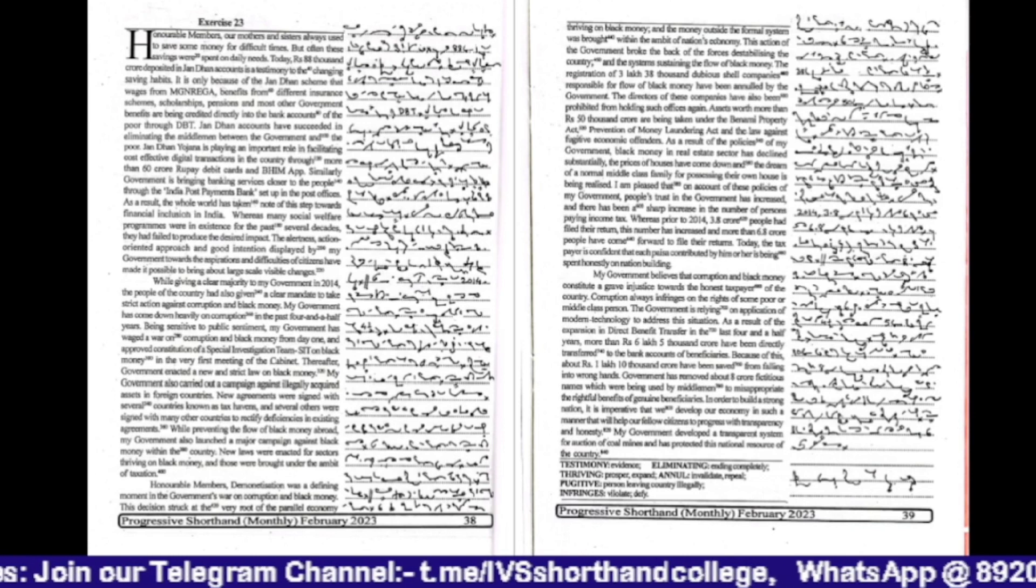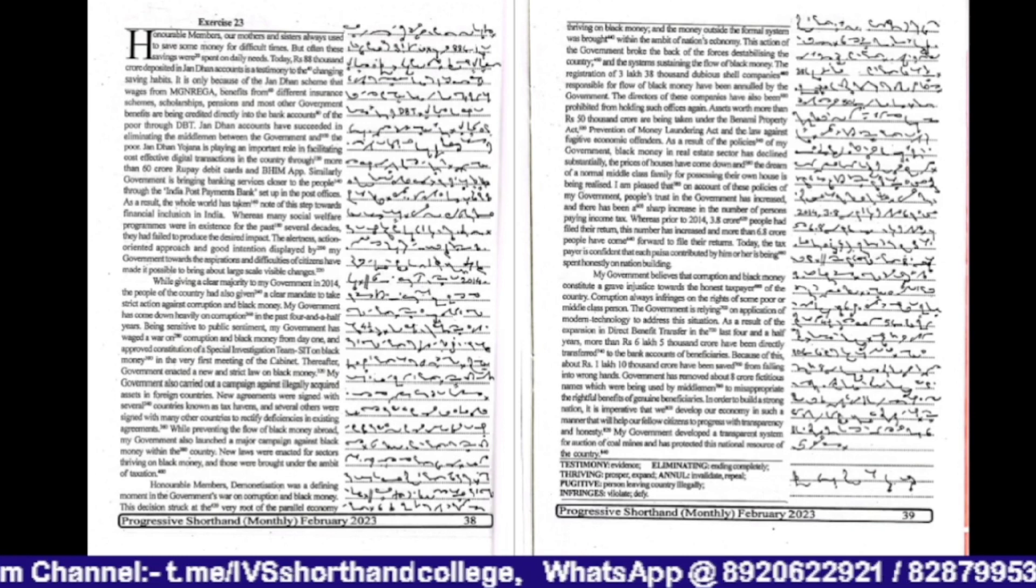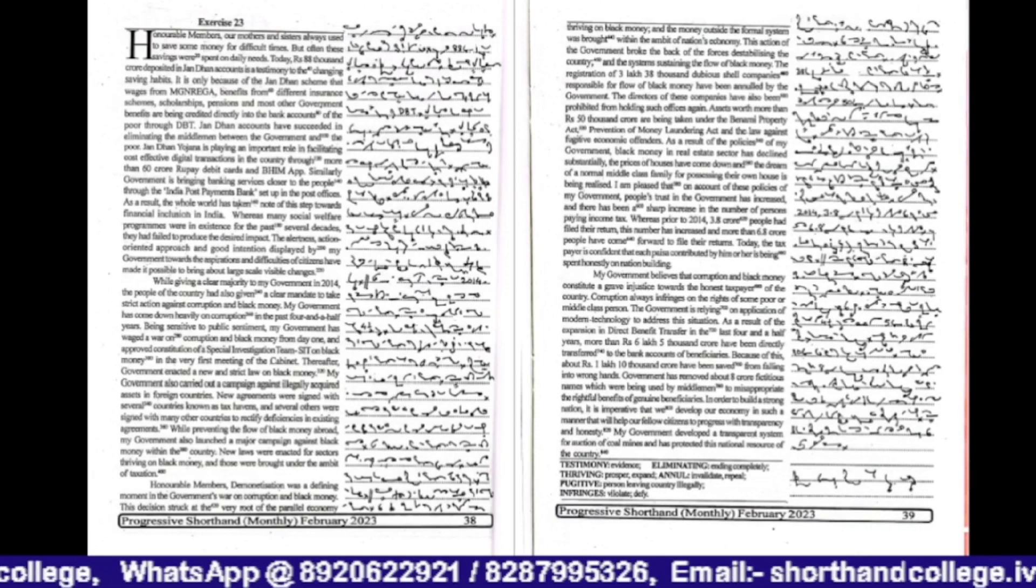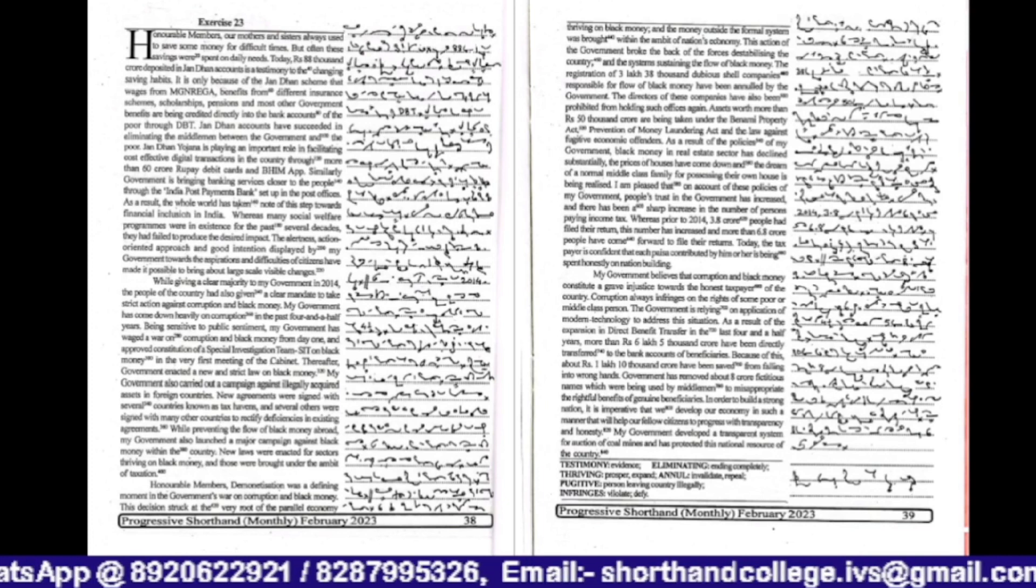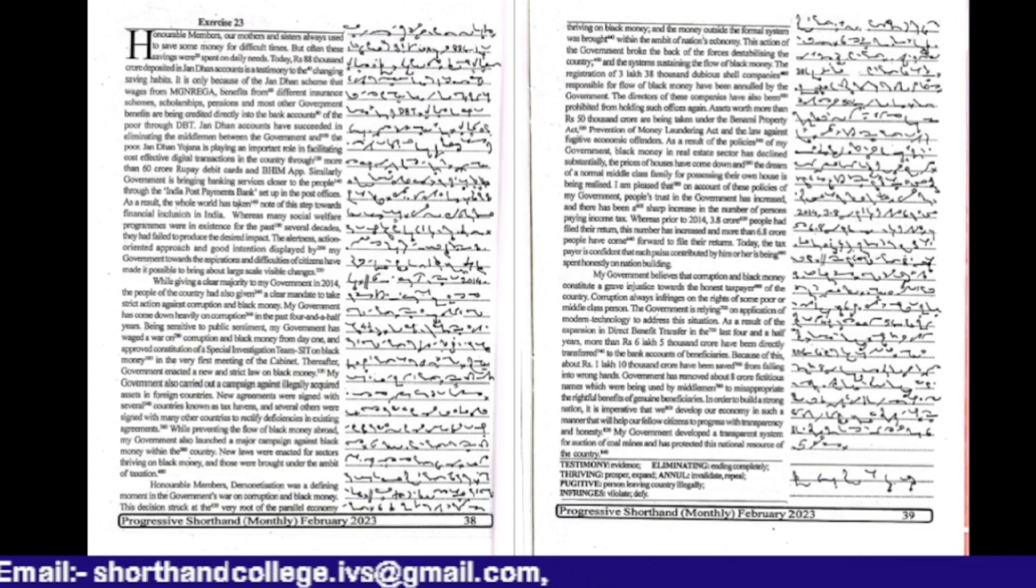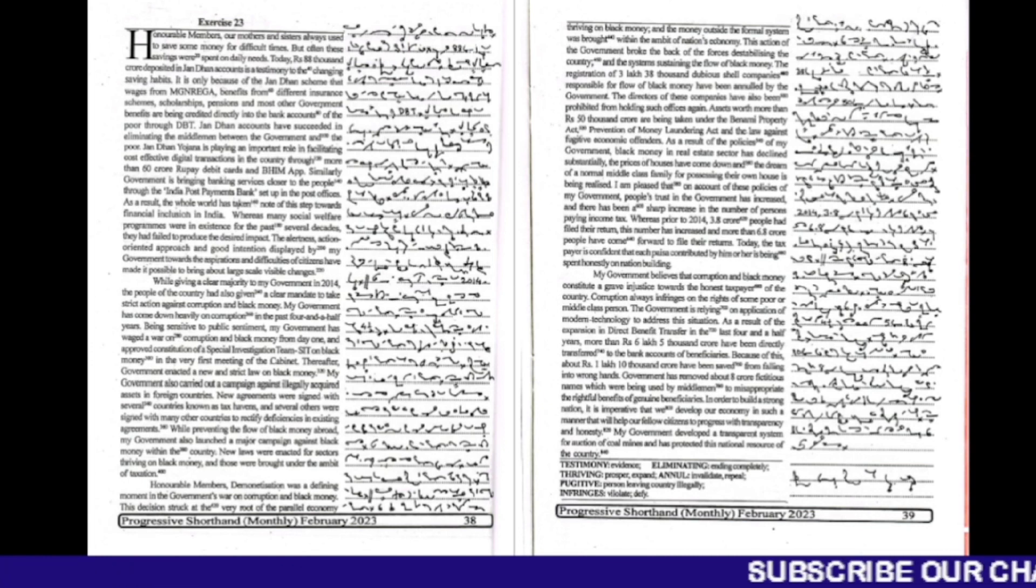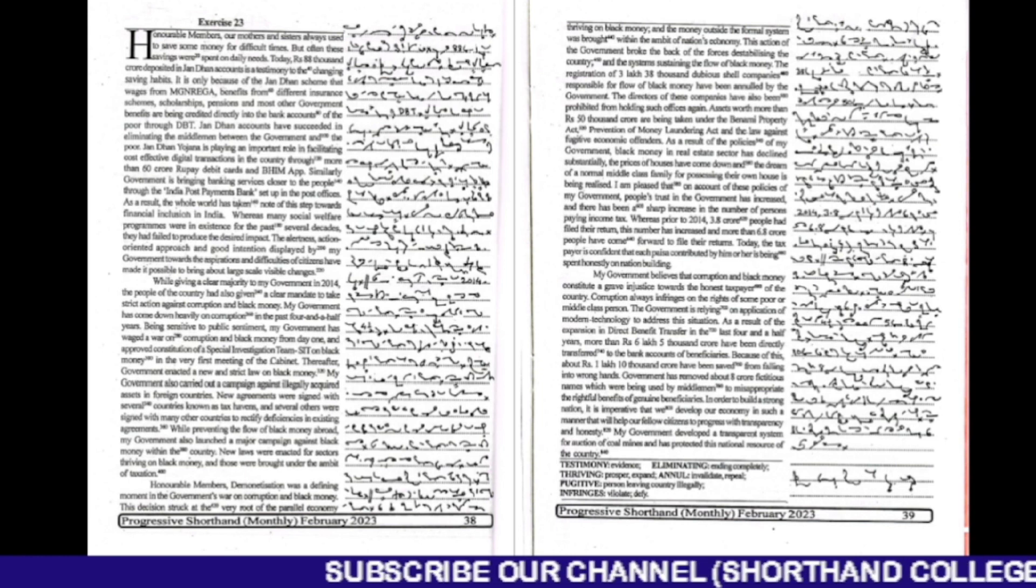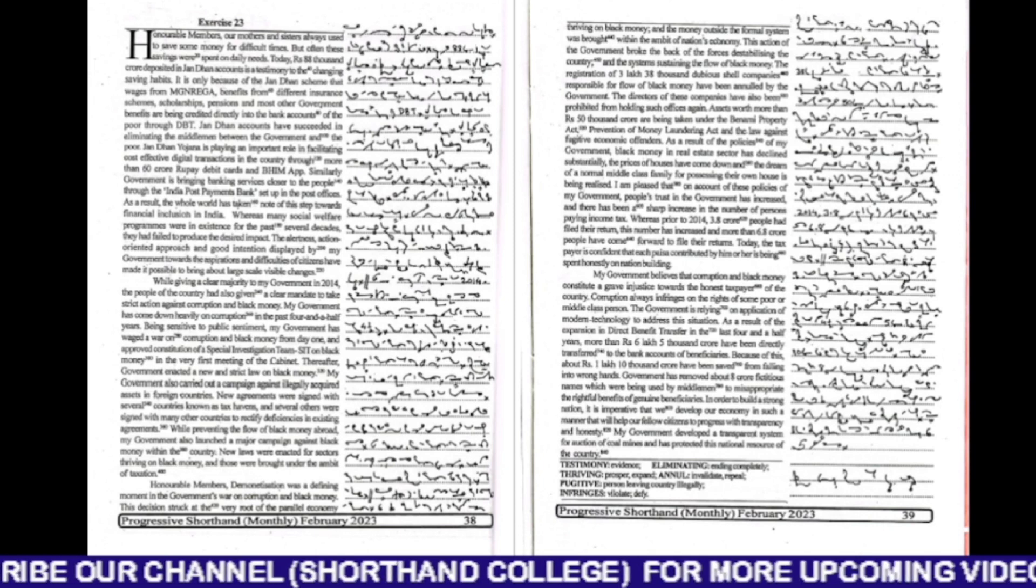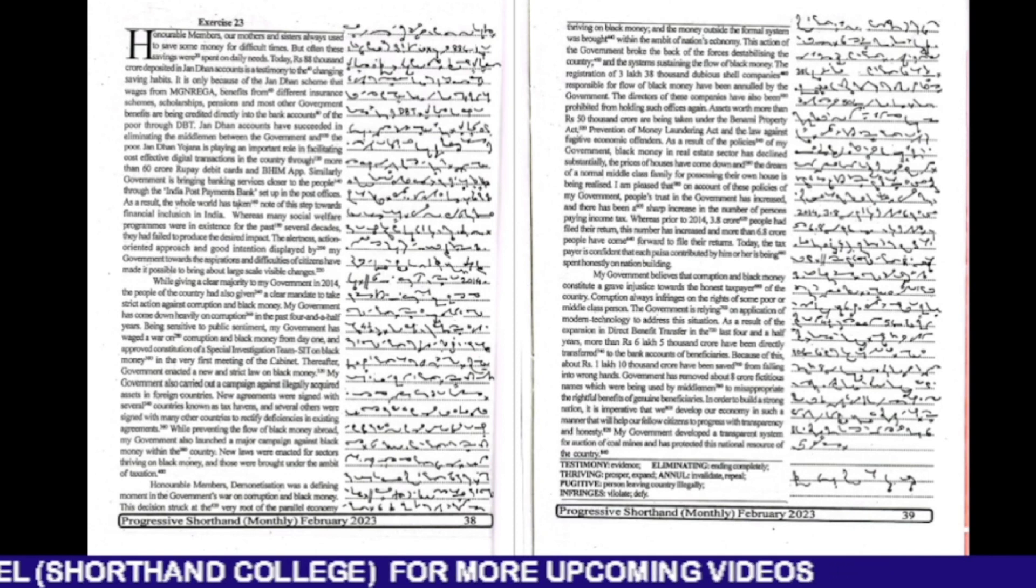Honourable members, demonetization was a defining moment in the government's war on corruption and black money. This decision struck at the very root of the parallel economy thriving on black money and the money outside the formal system was brought within the ambit of nation's economy. This action of the government broke the back of the forces destabilizing the country and the systems sustaining the flow of black money.